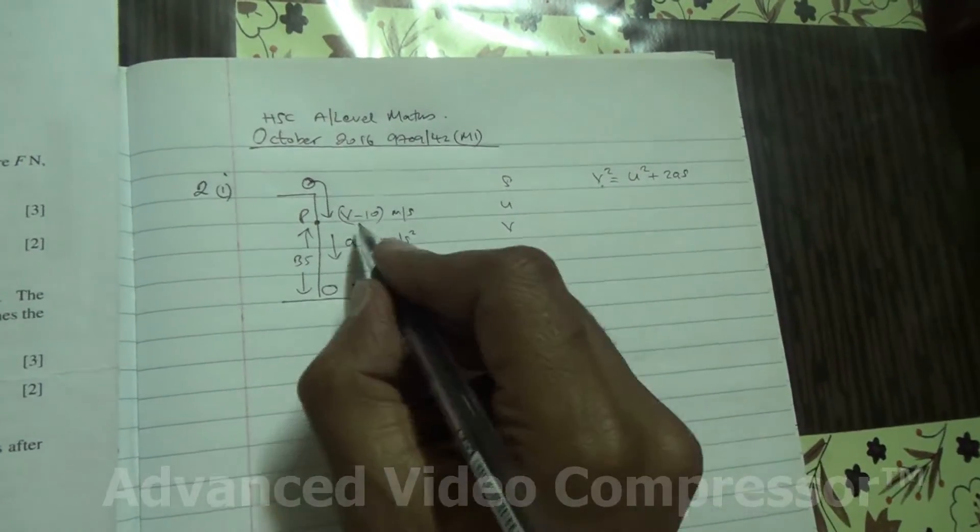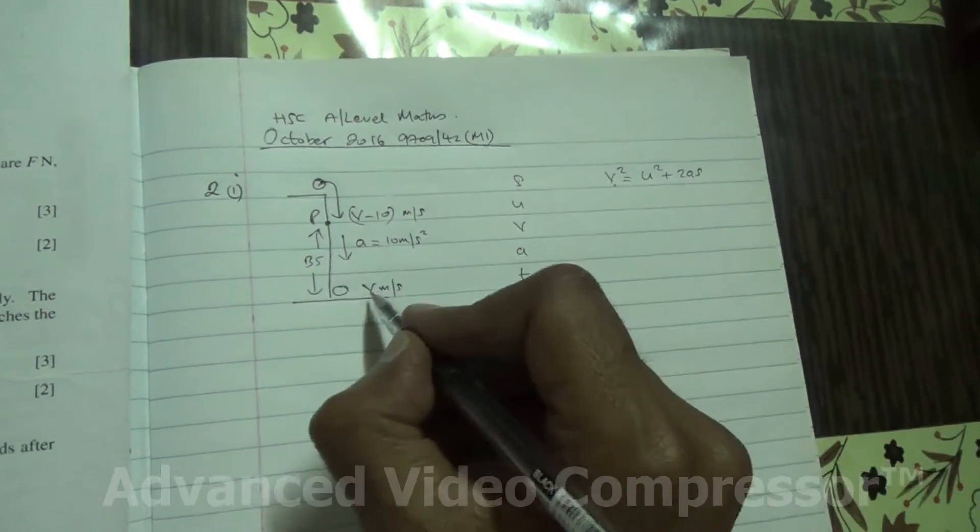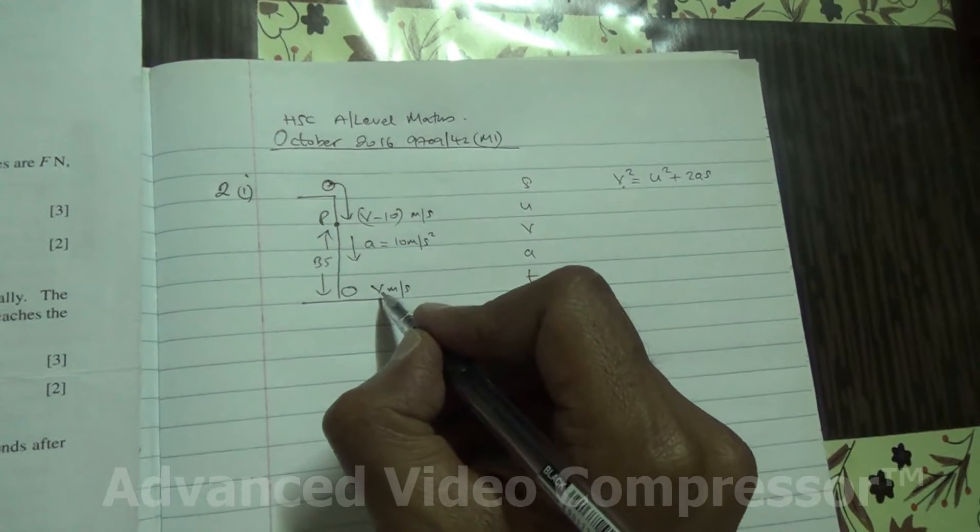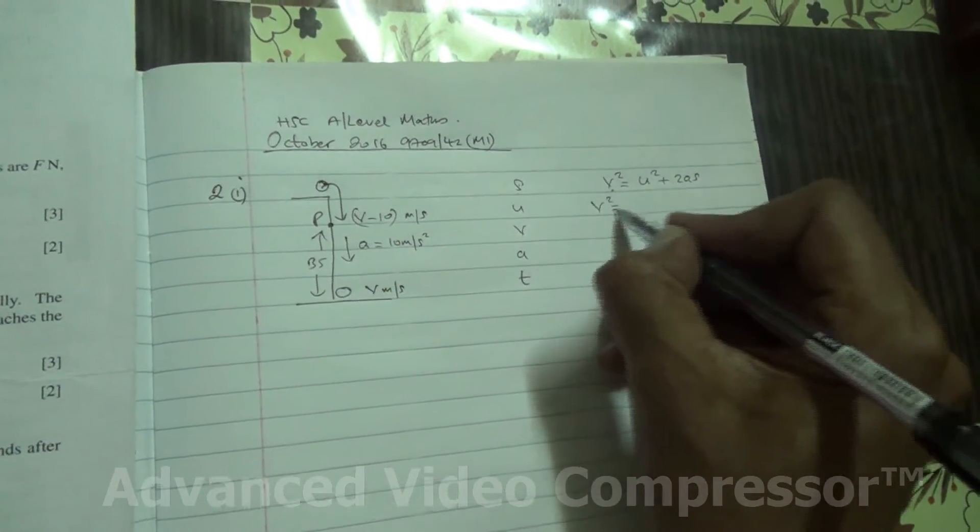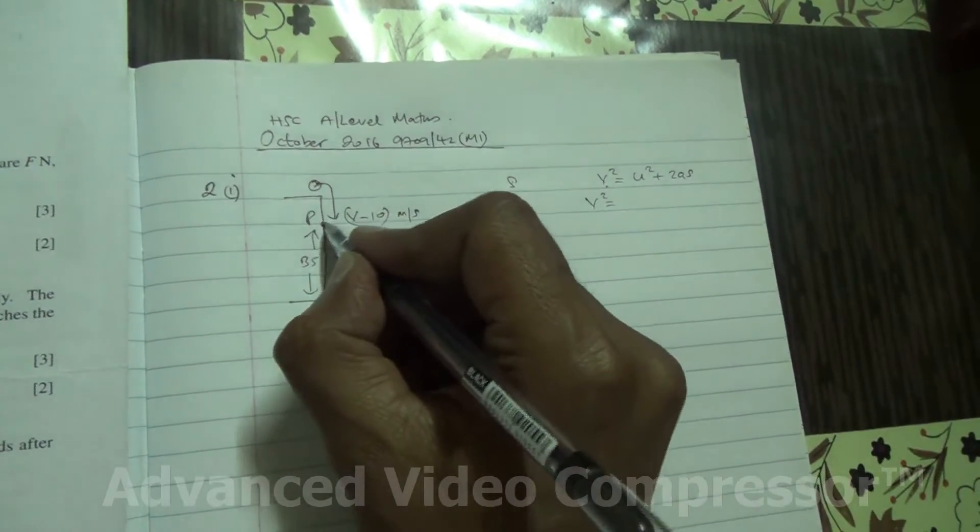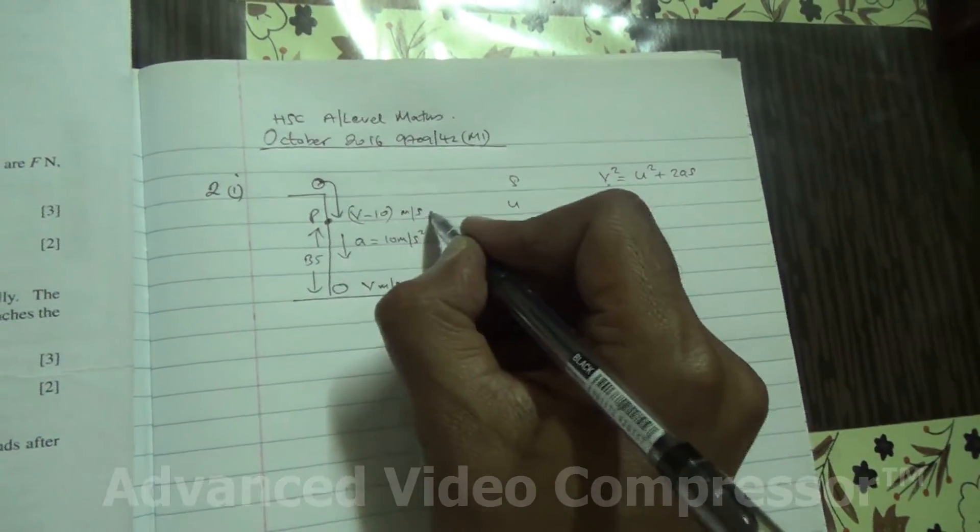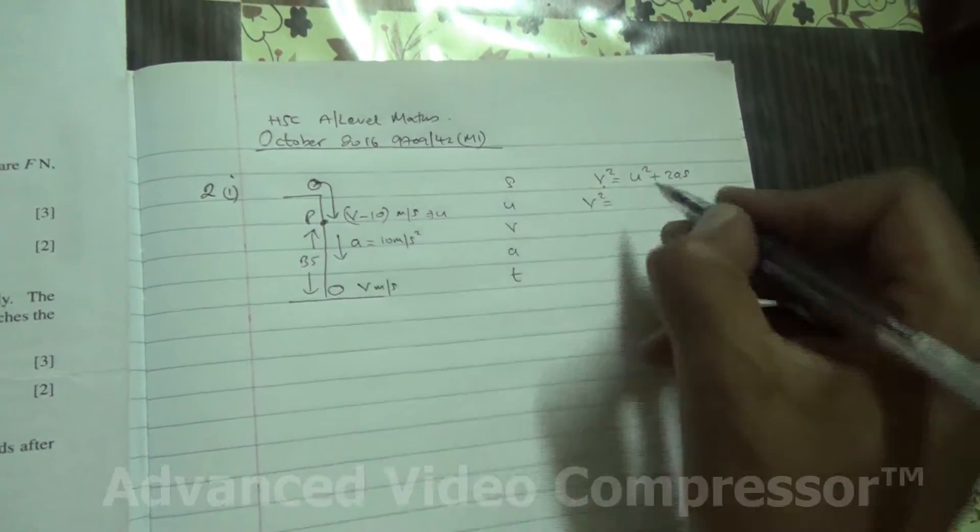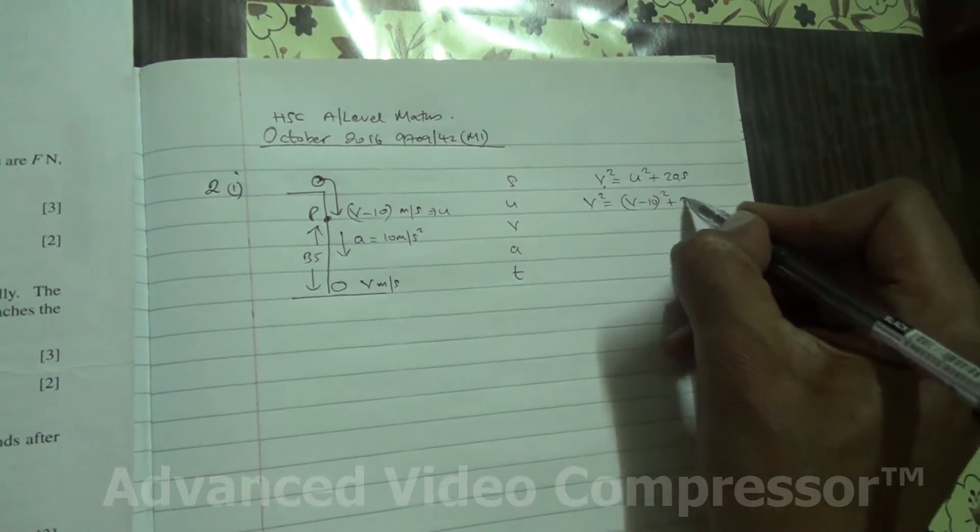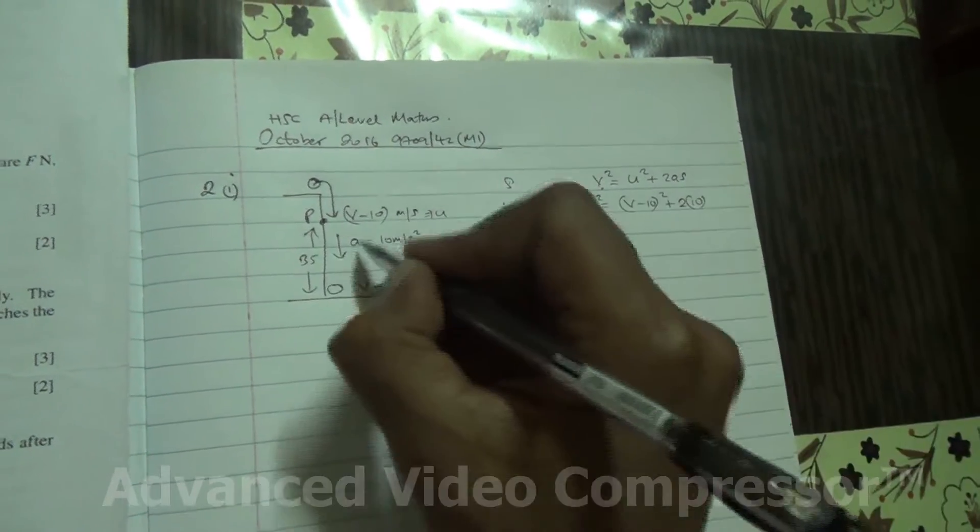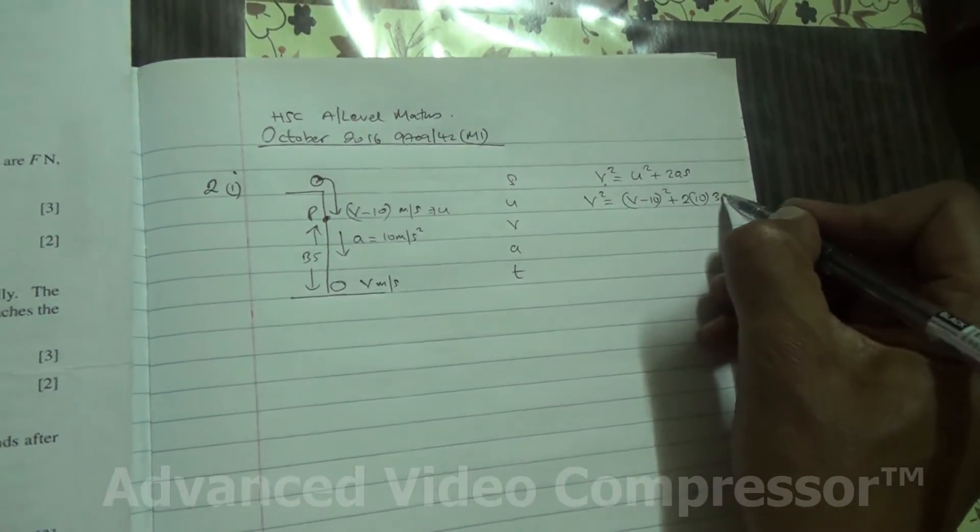What is v squared? Now, the v squared is the final velocity. So, the final velocity is v. So, we have v squared is equal to initial velocity. At this point here, the initial velocity is u. And u is v minus 10. So, v minus 10 all squared plus 2 times a. a is 10 times s. The distance here is 35.